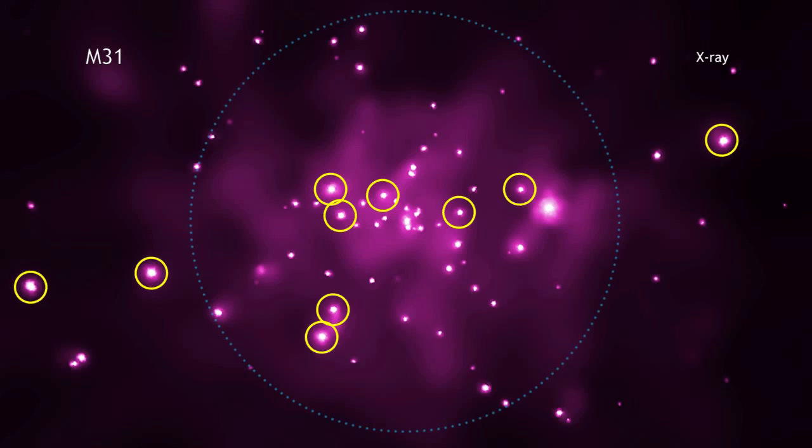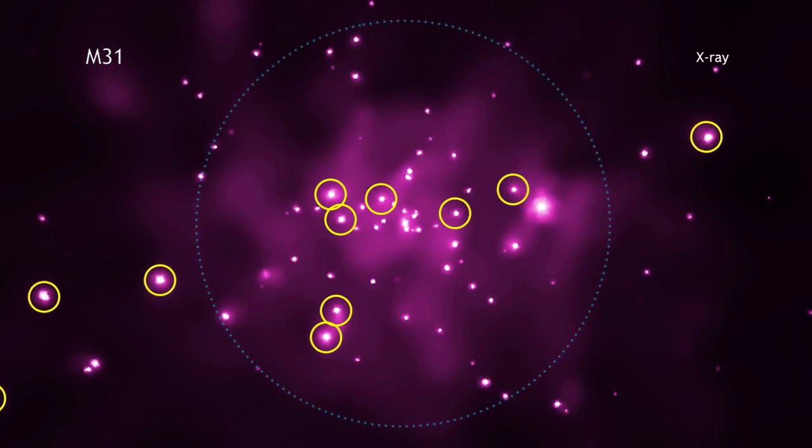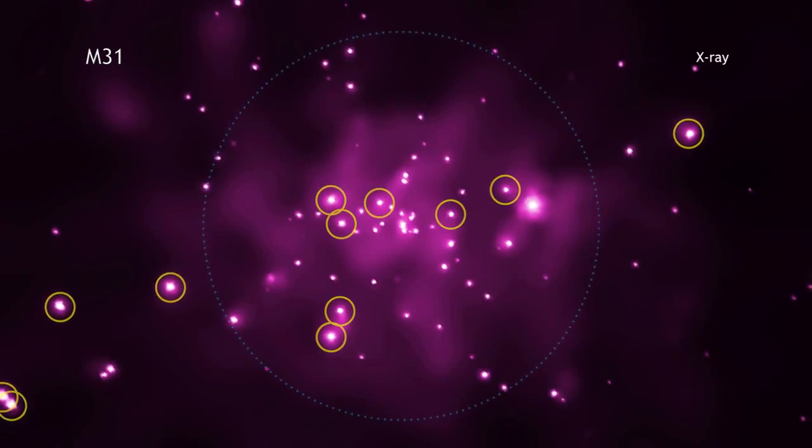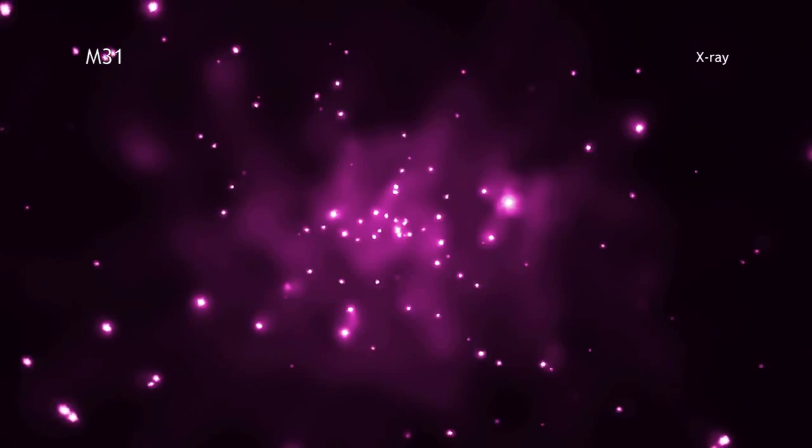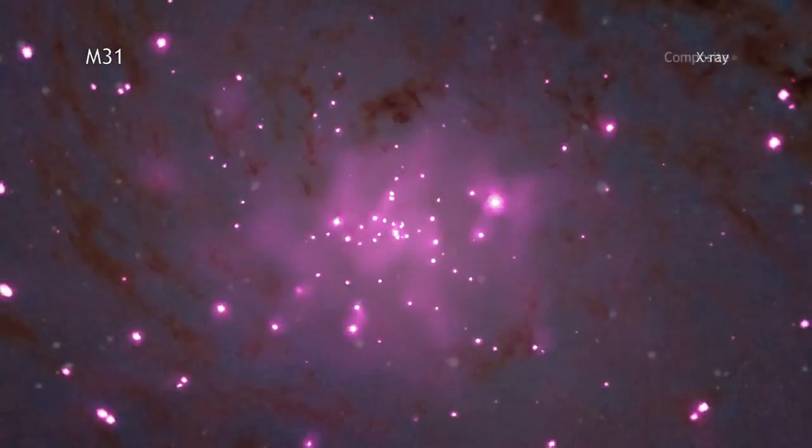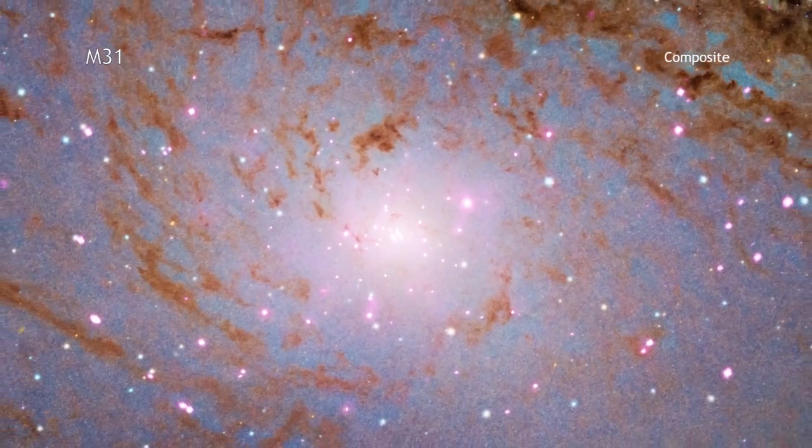Seven of these black hole candidates are within 1,000 light-years of Andromeda's center, more than what is found near the center of our Milky Way's core. This highlights that although Andromeda and the Milky Way are alike in many ways, they do have their differences.